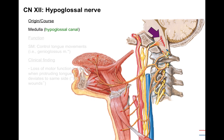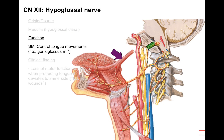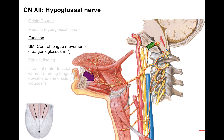Finally, the hypoglossal nerve, cranial nerve 12. This one also arises from the medulla oblongata and courses through the hypoglossal canal. It innervates all the tongue muscles, from the styloglossus and hyoglossus to the genioglossus. The genioglossus is the most clinically relevant — genio for chin, glossus for tongue — going from the mandible to the tongue. This muscle protrudes the tongue, moving it out of your mouth.